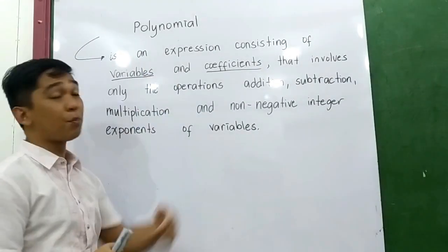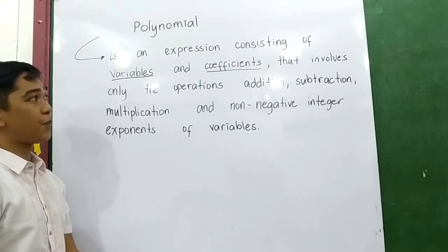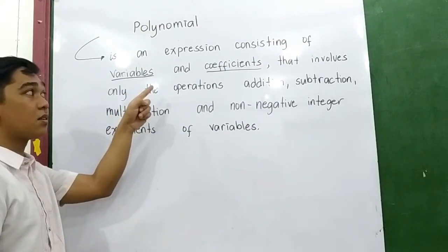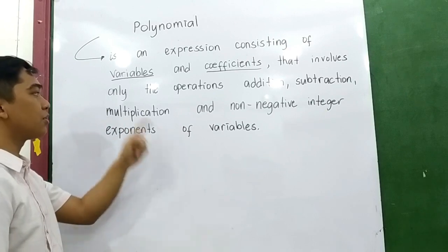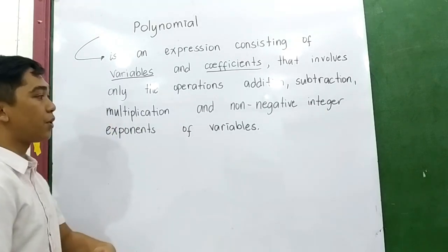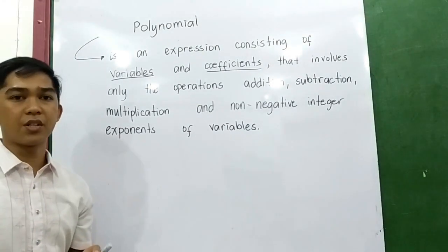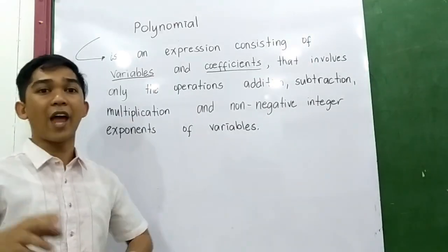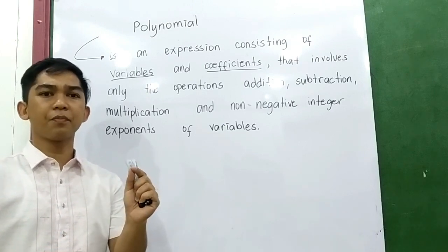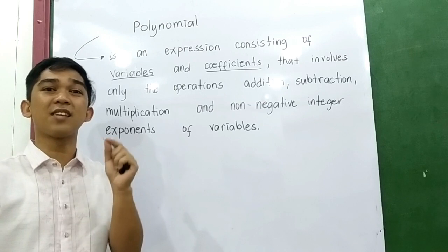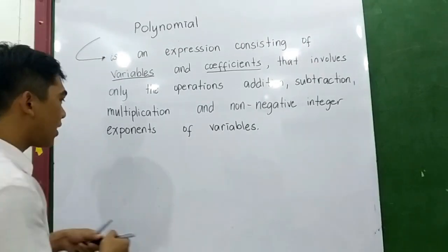This first lesson is about polynomials. Let us define polynomial. It is an expression consisting of variables and coefficients that involves only the operations addition, subtraction, multiplication, and non-negative integer exponents. That means not all expressions that we see in examples on the internet or in your handbook are examples of polynomials.